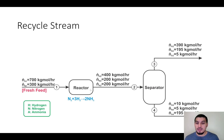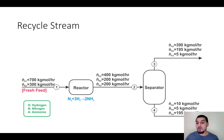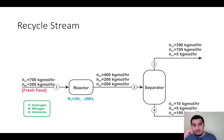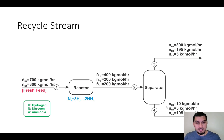The reaction doesn't happen with 100% efficiency, which means some hydrogen and nitrogen are not consumed. That's why the product contains ammonia, hydrogen, and nitrogen. The product from the reactor is fed to a separator because ammonia is the product and we need to get pure ammonia. The ammonia in this stream is 12.5%, so we feed it to a separator that splits the mixture: one part is very rich in hydrogen and nitrogen with small traces of ammonia, and the other stream is very rich in ammonia — 195 kilomoles per hour.